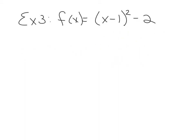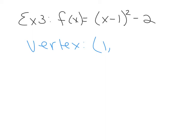Example 3: find the vertex by inspection. Remember, the expression inside the square affects the x-coordinate and gives us the x-coordinate with the opposite sign, so the x-coordinate here will be positive 1. The term outside the square gives us the y-coordinate, which will be negative 2. So the vertex for this function is at (1, −2).